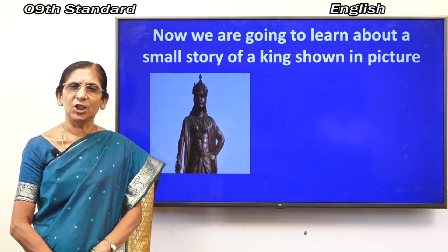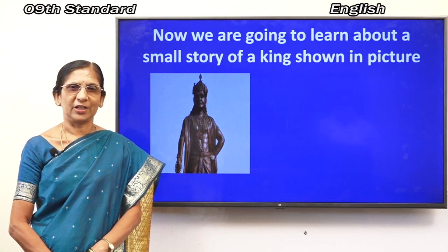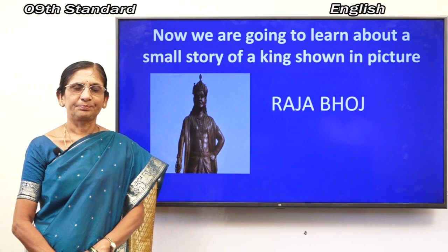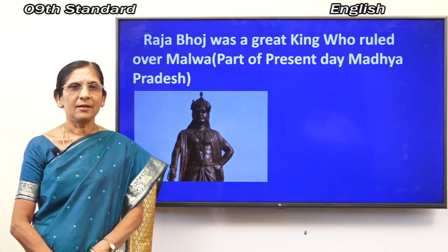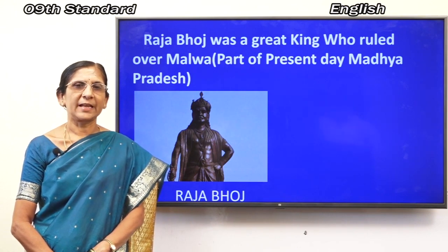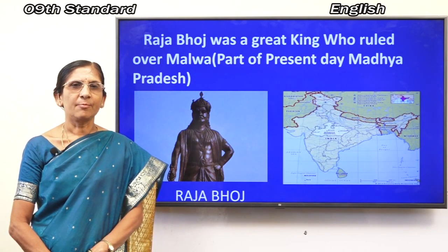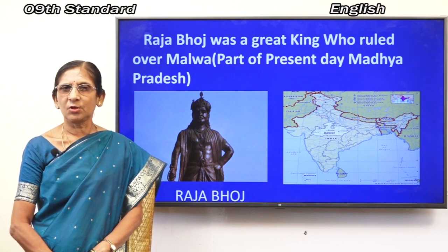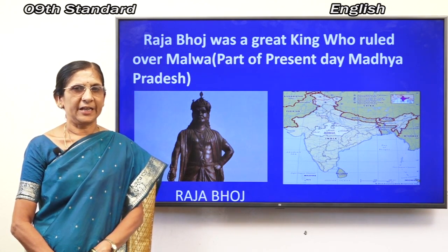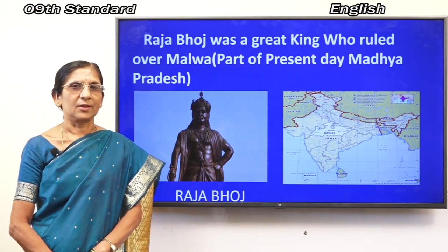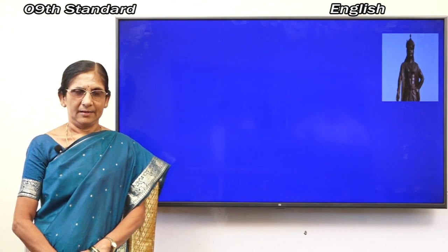You will be eager to know who is in the picture. His name is Raja Boj — the king is Raja Boj. Raja Boj was a great king who ruled over Malwa, part of the present-day Madhya Pradesh. So Raja Boj ruled over Malwa — you can identify him now. What is the speciality of this king? Let's learn about him.